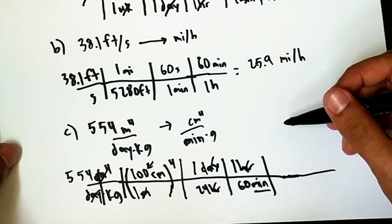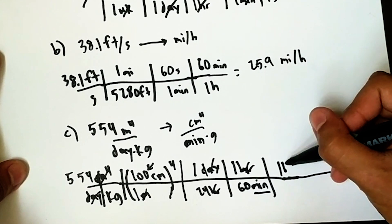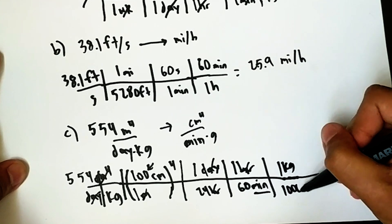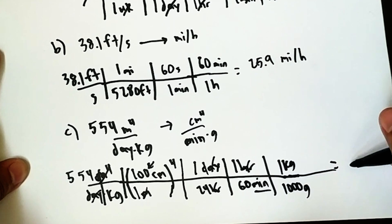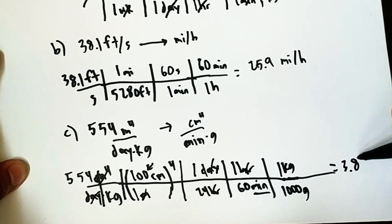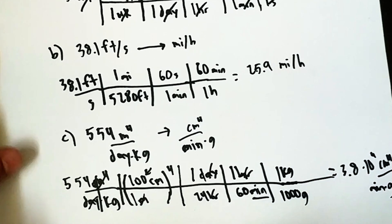And then, finally, kilograms. One kilogram is 1,000 grams. Which, of course, gives us the 38,000 that we wanted.